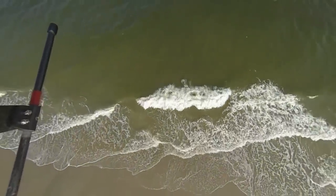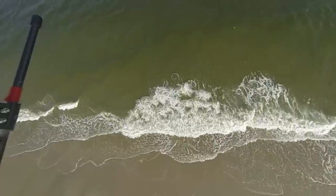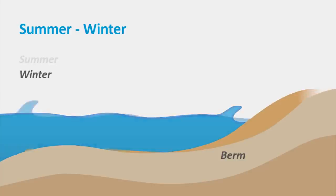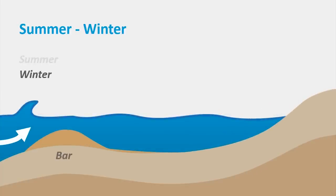Beaches generally respond to the seasons. Let us look at the profile of a beach, perpendicular to the shoreline. In summer, most of the sand is found higher up the profile, where it might form a so-called summer berm around the waterline. The higher, more energetic waves in winter move sand down the profile, such that a pronounced sandbar is formed further offshore. When the smaller summer waves set in again, the bar is gradually lowered and the berm is restored.